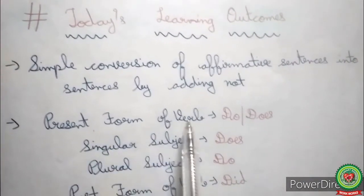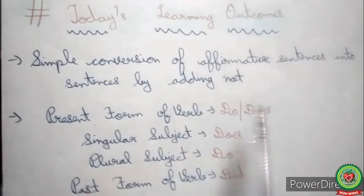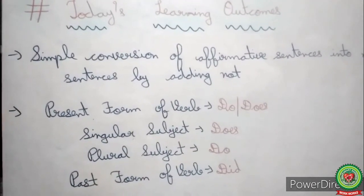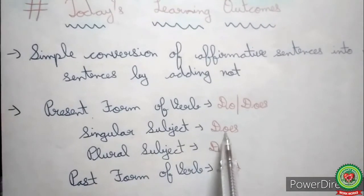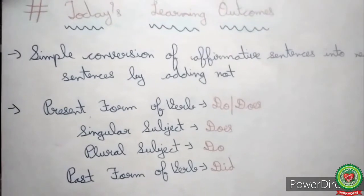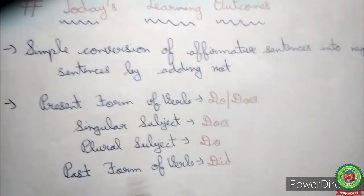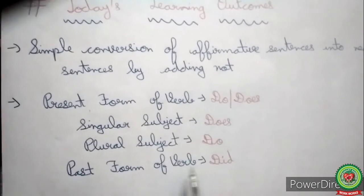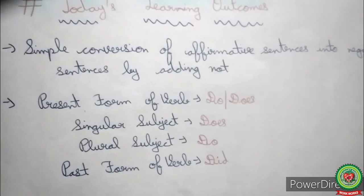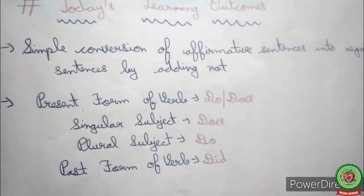Whenever the present form of verb is given, we add 'do' or 'does' as helping verbs. When a singular subject is given — like he, she, it — we add 'does.' When plural subjects are given — like I, we, they — we add 'do.' Whenever the past form of verb is given, we add 'did' as a helping verb. I hope you all have understood the chapter. Now follow the schedule in the snap homework and complete all the exercises. Thank you.